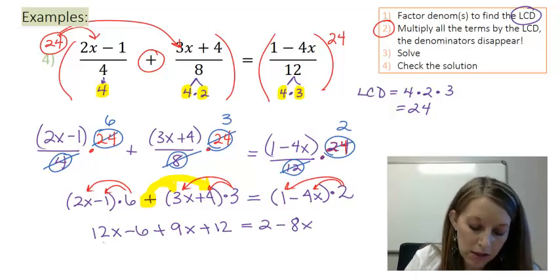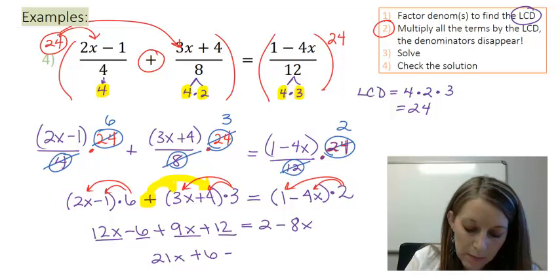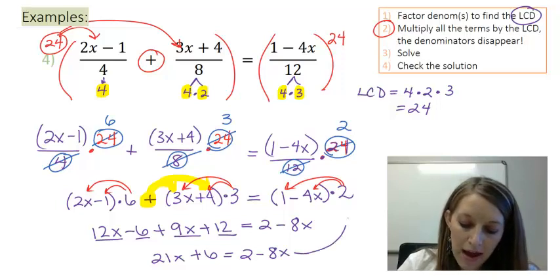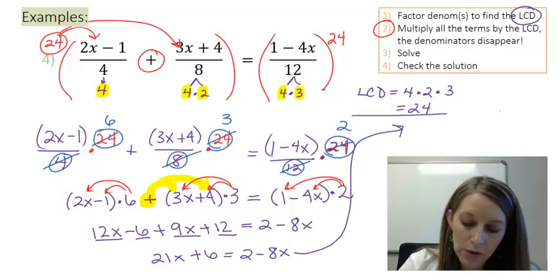Now combining like terms, 12x plus 9x gives me a 21x. 12 minus 6 leaves me with a 6. And copying down my right hand side of 2 minus 8x. Now I've simplified all of these individually.